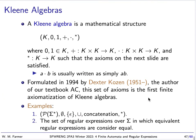These axioms were first formulated by Dexter Kozen, who is the author of our textbook, Automata and Computability. Here are a couple of examples of Kleene algebras. The first has members that are all subsets of strings over sigma, with the empty set as zero, the set containing the empty string as one, union as plus, concatenation as dot, and the asterate property as star. Another example is the set of regular expressions over sigma where regular expressions are considered equal if they match the same language.